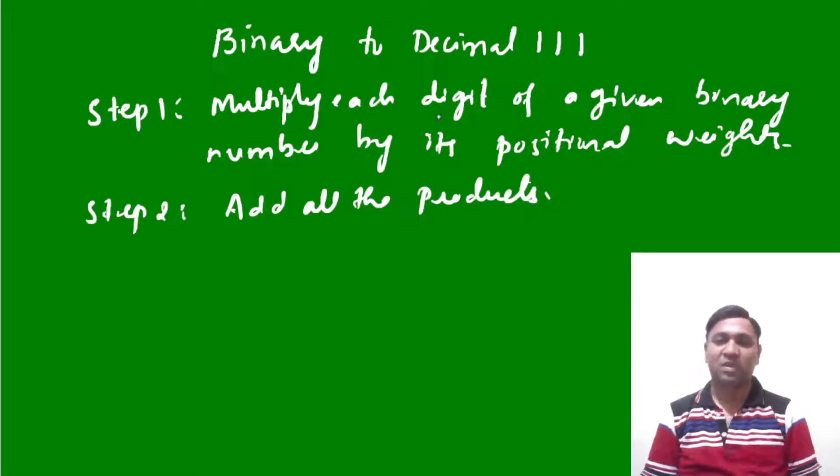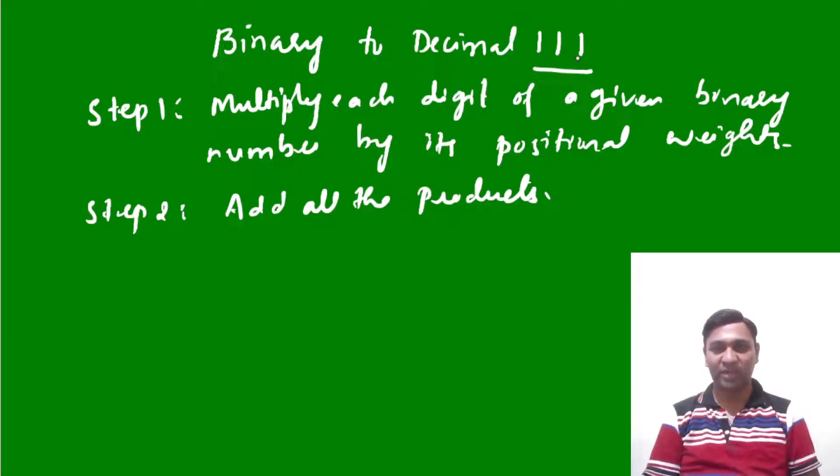Now let us go for the given example. Here 111 is given. So from the right hand side, the first number whose positional weight is zero, then the next one is one, and the next one is two.